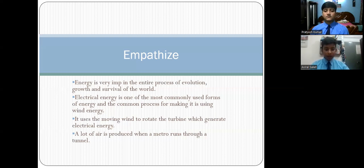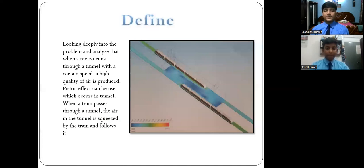A lot of air is produced when a metro runs through a tunnel. By looking deeply into the problem and analyzing when a metro runs through a tunnel with a certain speed, a high quality of air is produced. Piston effect can be used which occurs in tunnels. When a train passes through a tunnel, the air in the tunnel is squeezed by the train and follows it.